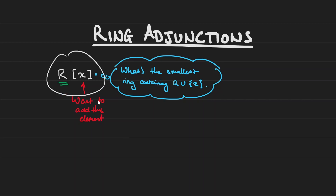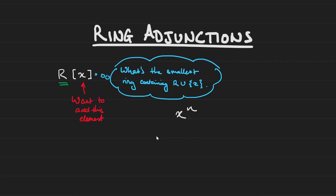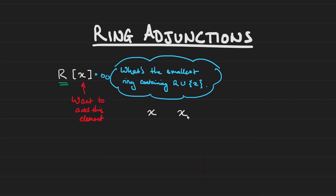The reason why is because rings are supposed to be closed under multiplication, which means if x is really supposed to live inside this ring, then x times x — or x squared — must also be in the ring. X cubed must also be in the ring, and in general x to the n must also be in the ring. And all combinations of x, x squared, up to x to the n — but that's basically the set of all polynomials. So essentially when you want to adjoin an element — in this case a general element x — to a ring, you want to add all the powers of x along with all their linear combinations as well.